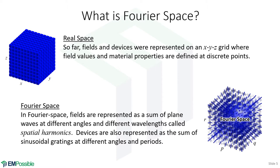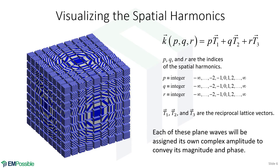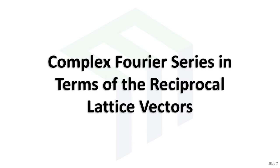That plane wave expansion comes from our Fourier series expansion. Here is an equivalent, slightly different way to visualize these spatial harmonics — showing little cubes, each containing one of those plane waves. In reality, we'd bring all these cubes together and add them all up to get the overall field, because our field is the sum of all those plane waves. So this is another equivalent way to visualize Fourier space. Just remember, we're storing amplitudes of plane waves.